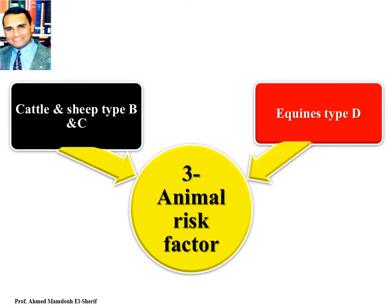Animal risk factors: Cattle and sheep are more likely infected by toxins of Clostridium Botulinum types B and C, while equines are mostly infected by Botulinum type D.